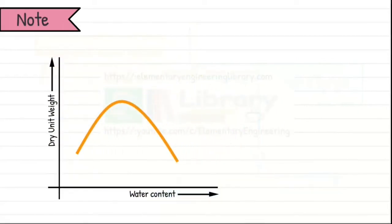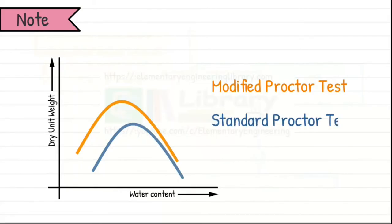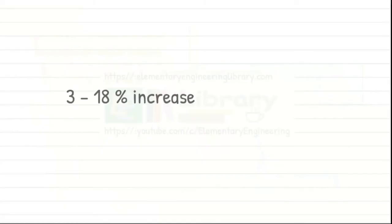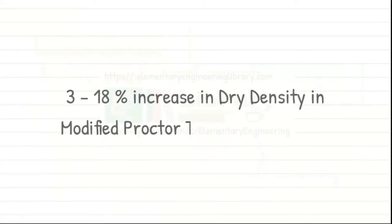Notable thing is, compaction curve for modified proctor test is higher and to the left of that obtained from the standard proctor test for the same soil. Heavier compaction increases the maximum dry density but decreases the optimum water content. The percentage increase of dry density is between 3 to 18% for most soils.